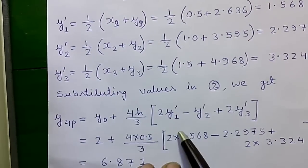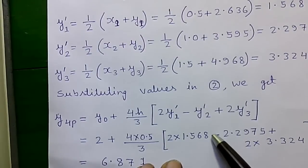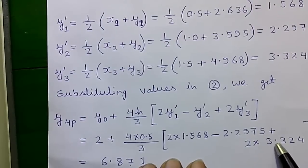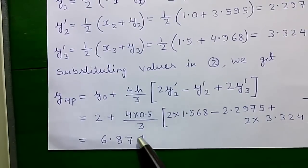So 4 times 0.5 divided by 3, 2 times y'(1) this value minus y'(2) value this value plus 2 times y'(3) value that is this value. So we will get 6.871.